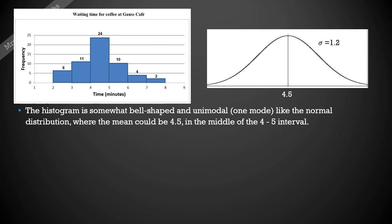We're going to run through the things that you should compare. First of all, have a look at the shape. The histogram is somewhat bell shaped, it looks a little bit like the bell curve. It's unimodal, meaning it has one peak just like the normal distribution, and the mean could be 4.5 in the middle of that 4 to 5 interval. We could go through and work out exactly what we estimate that mean to be, but that's quite a lengthy calculation.